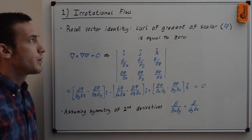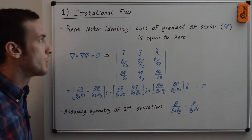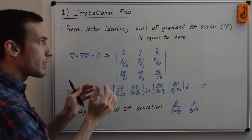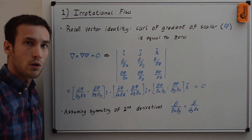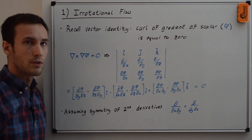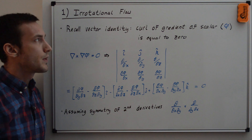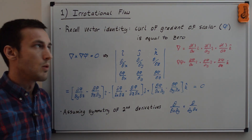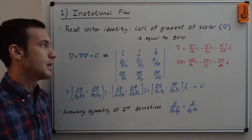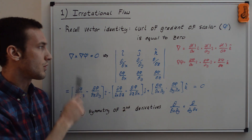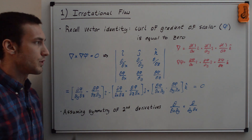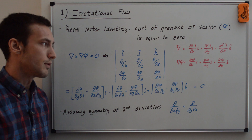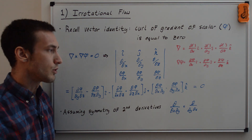We're going to recall the vector identity that the curl of a gradient of a scalar field is equal to zero. So del cross del phi equals zero, where phi is our scalar field and del phi is its gradient. I have another video on this vector identity, so I won't go through the full proof here, but essentially del cross del phi equals zero is true as long as you assume the symmetry of second derivatives, which is true in most cases you'll encounter.